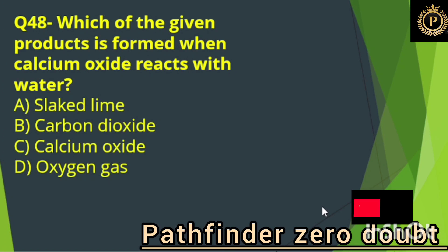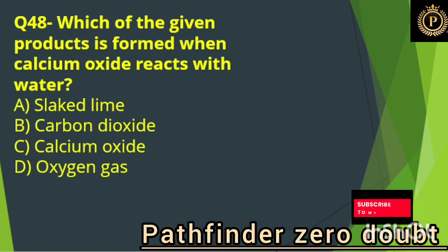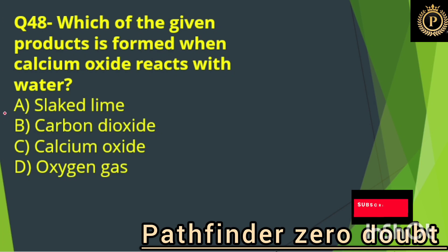Which of the given products is formed when calcium oxide reacts with water? Option A, slaked lime.